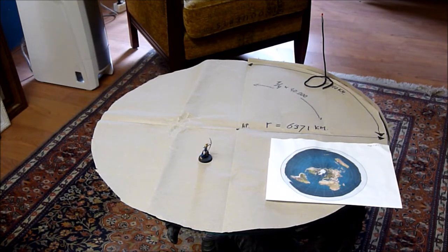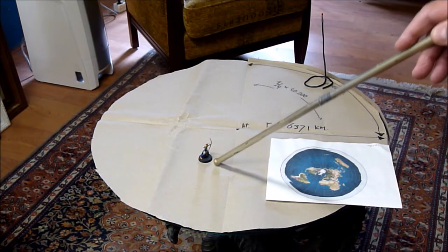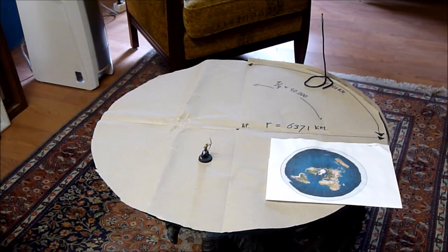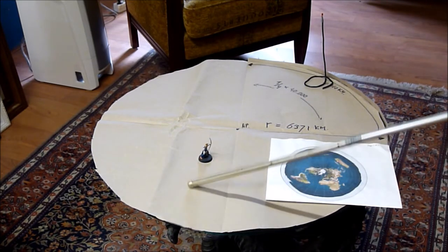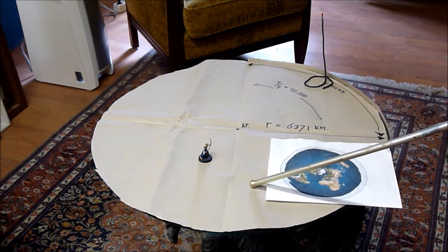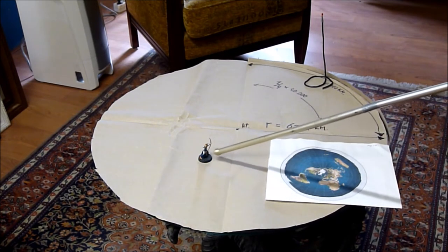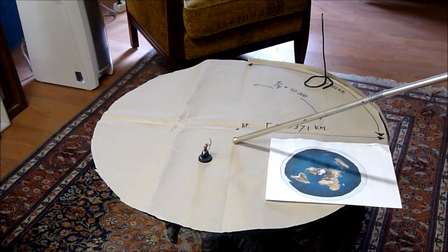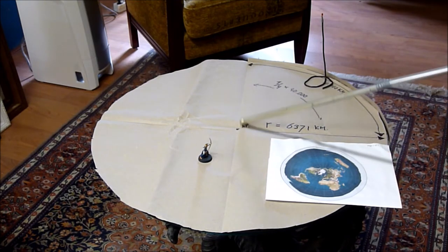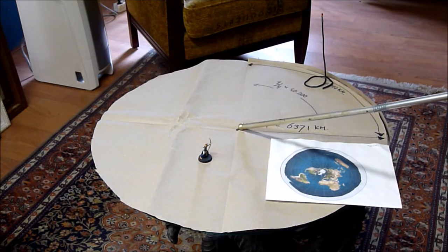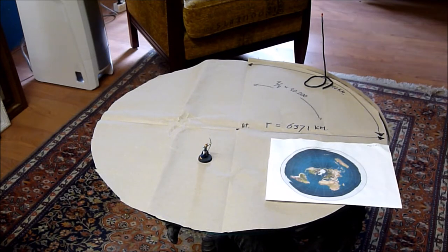En waarom gaat het mij nou? Dit mannetje zit op ongeveer de vijftigste breedte graad. Dus de evenaar, hier heb je dan eerst de kreefskerkring en dan heb je hier ergens Nederland en dan ga je nog een stuk helemaal Noorwegen enzovoort, totdat je op de Noordpool bent. En op zo'n dag, op zo'n nacht, wanneer de zon helemaal in het noorden staat, van ons uitgezien, dan staat die nog altijd zo hoog.